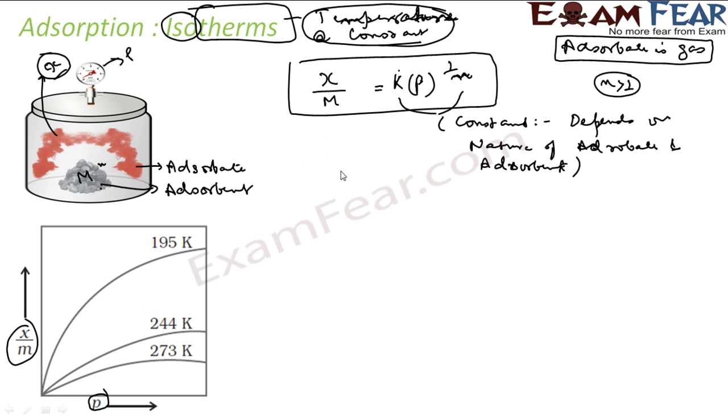Now if you take log on both sides, what do you get? Log x by m equals log k plus 1 by n log p.